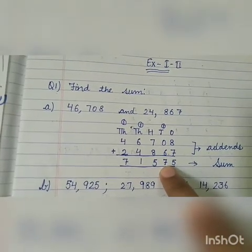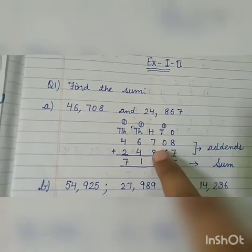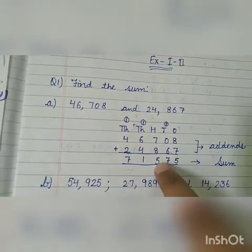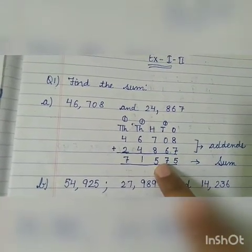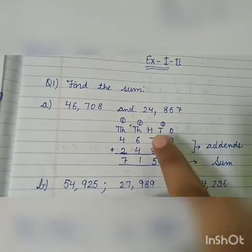Now there is no carry here. Again, seven plus eight is also fifteen, so write five here and carry one to the next place. Then you have to add six plus one.